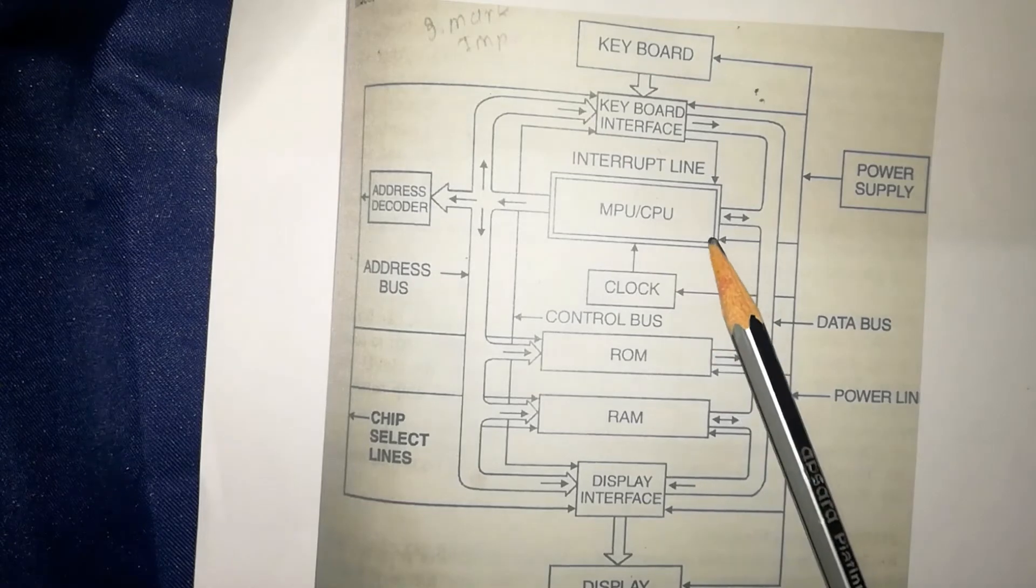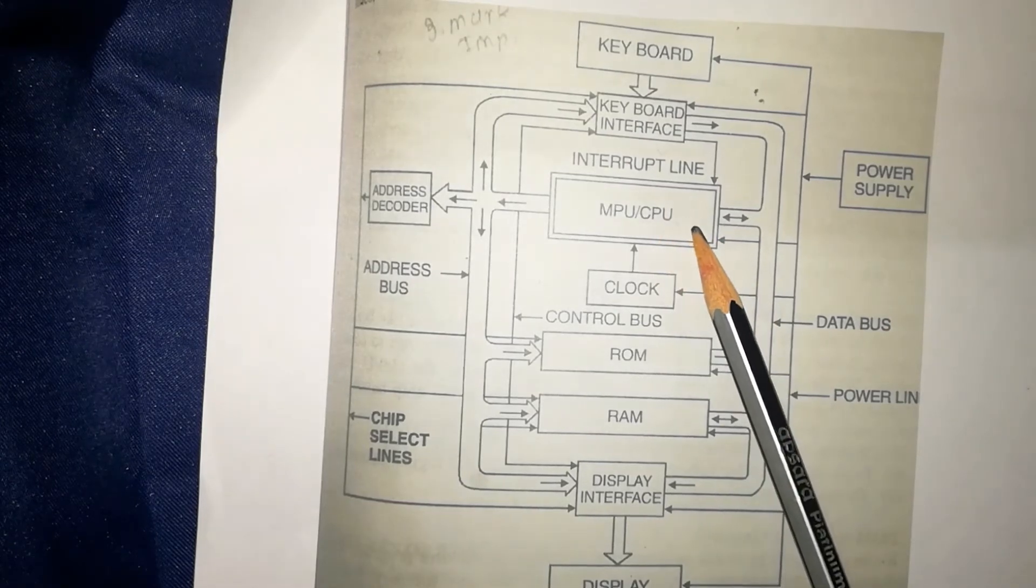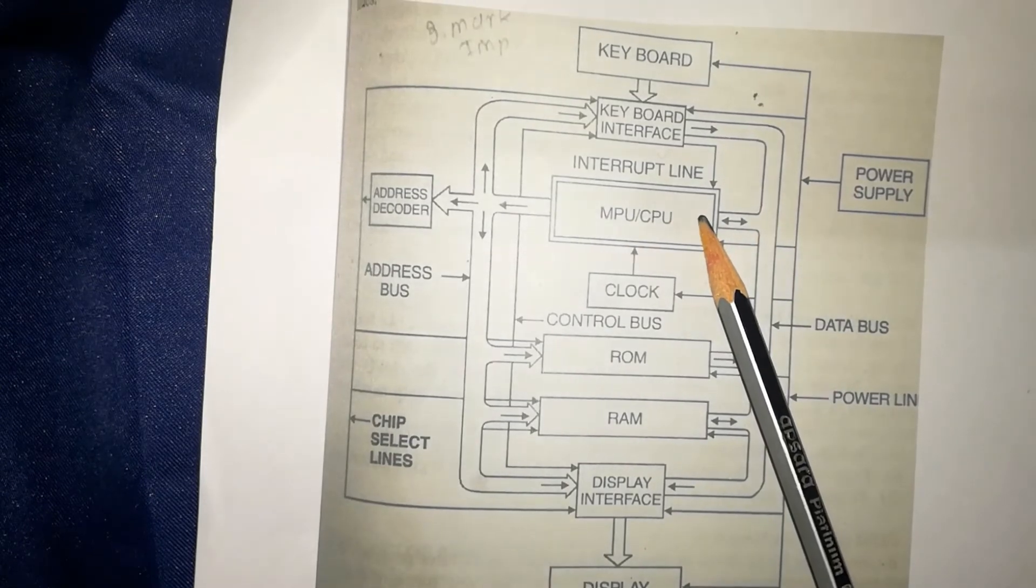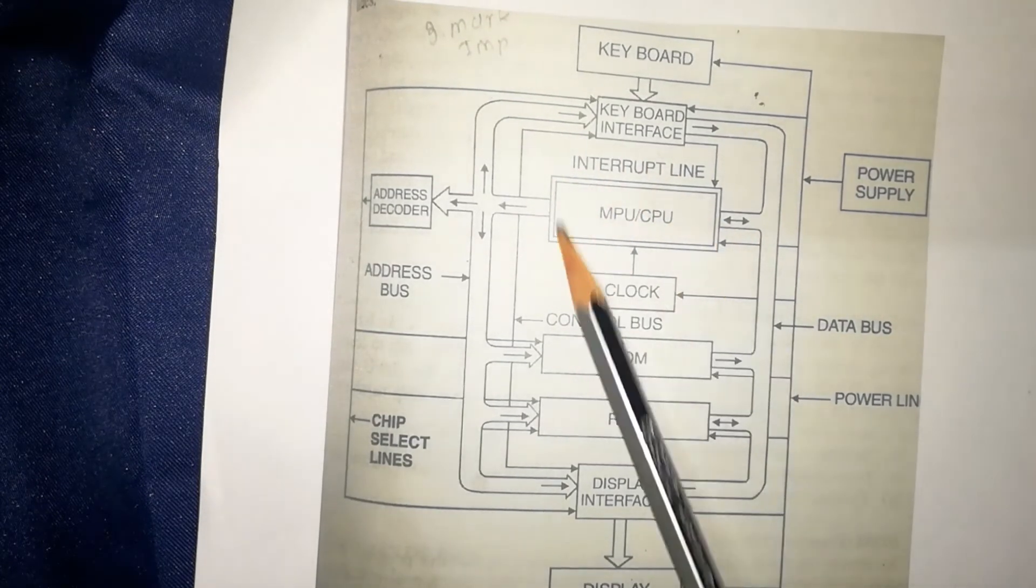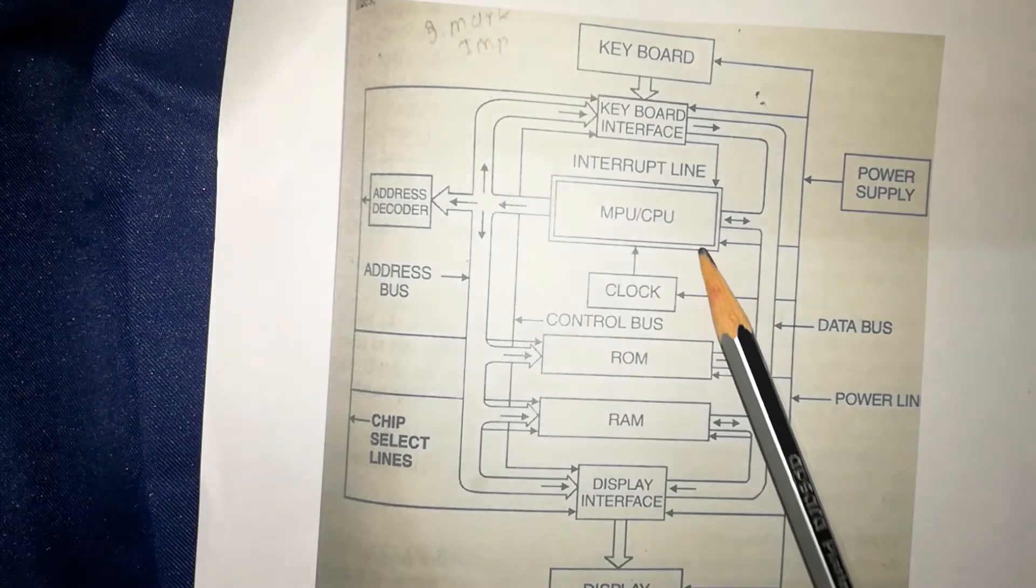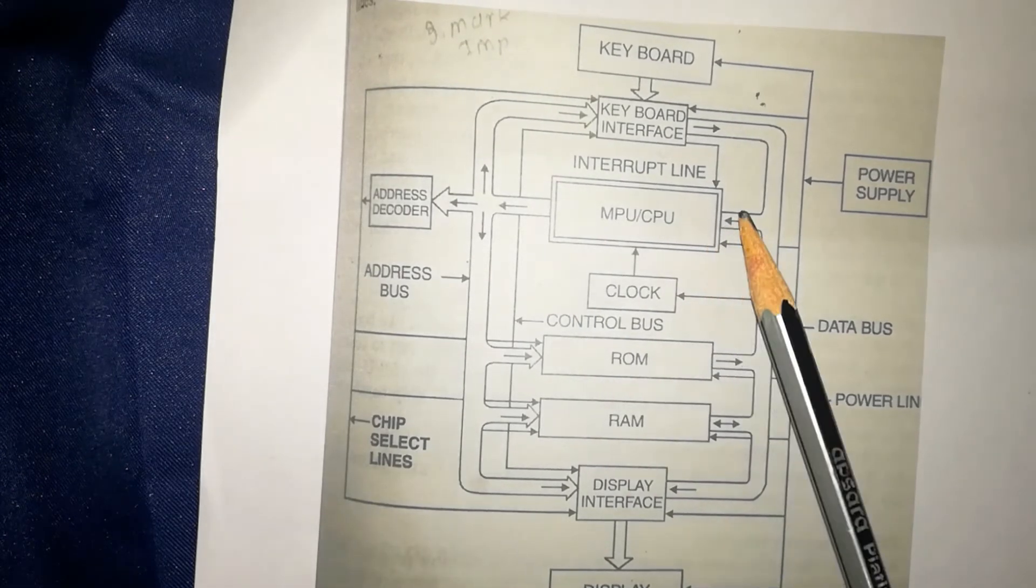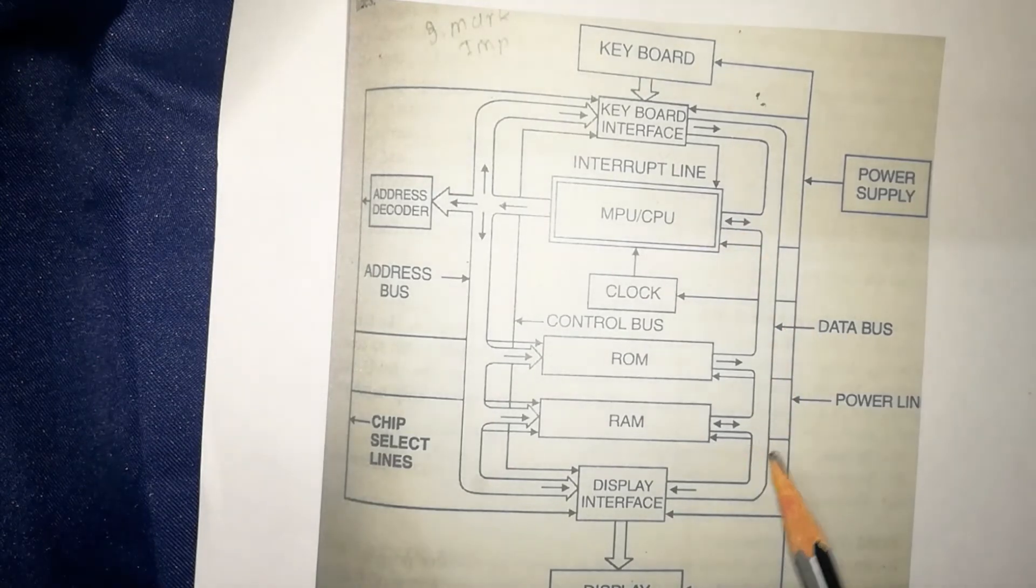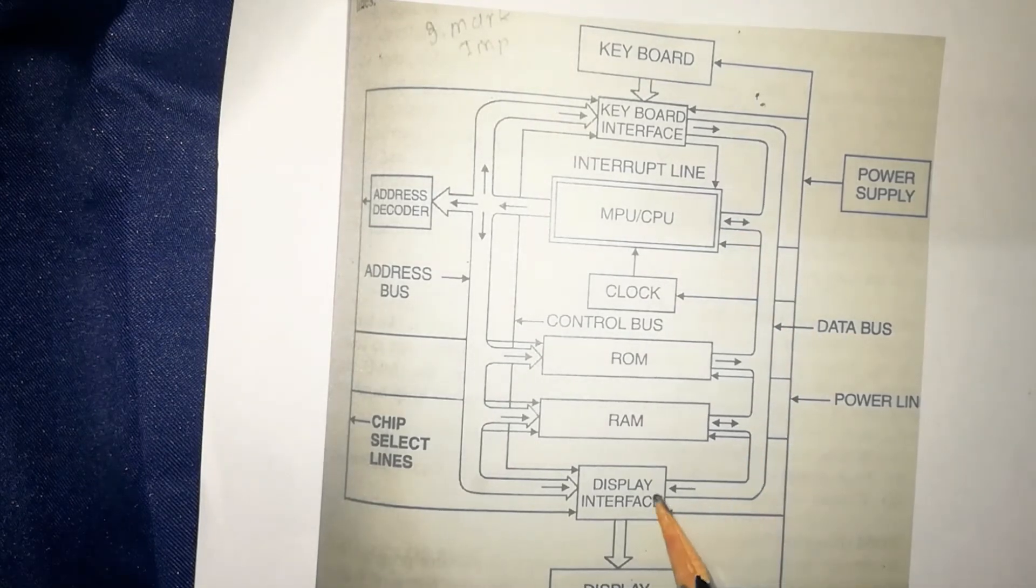Here, MPU or CPU, that is microprocessor unit or central processing unit, are one and the same. The main functions of MPU is to receive the information in digital form, to process the information by means of arithmetic and logical operations, and to send the result or information in standard form.